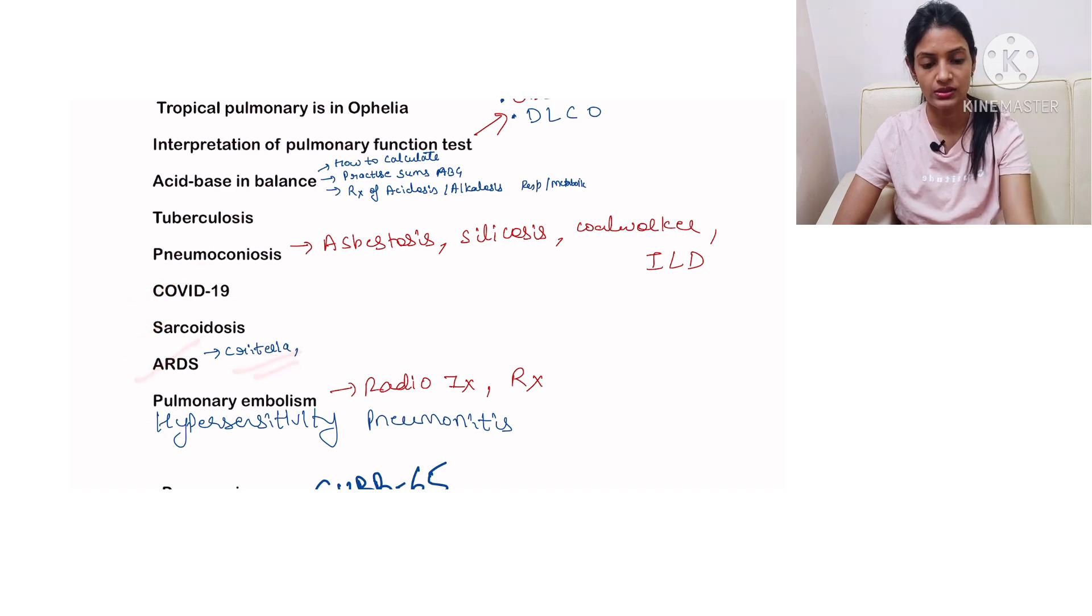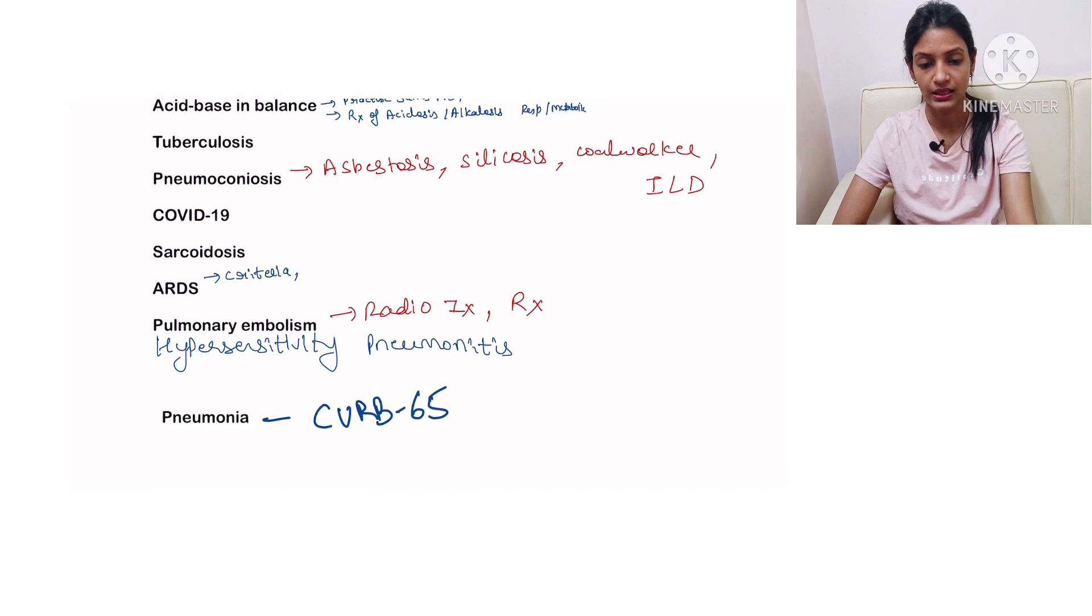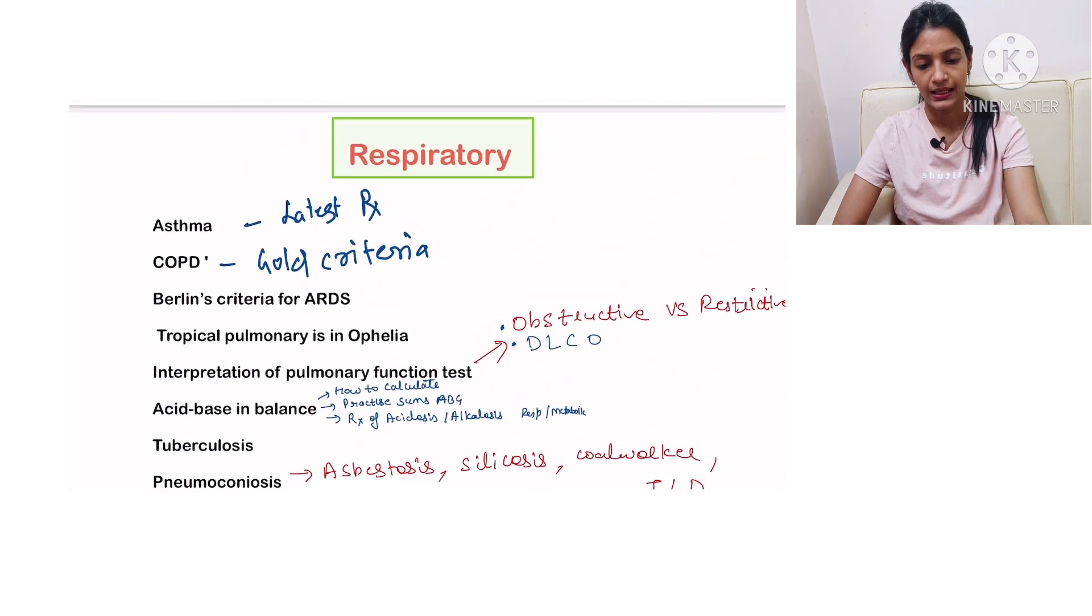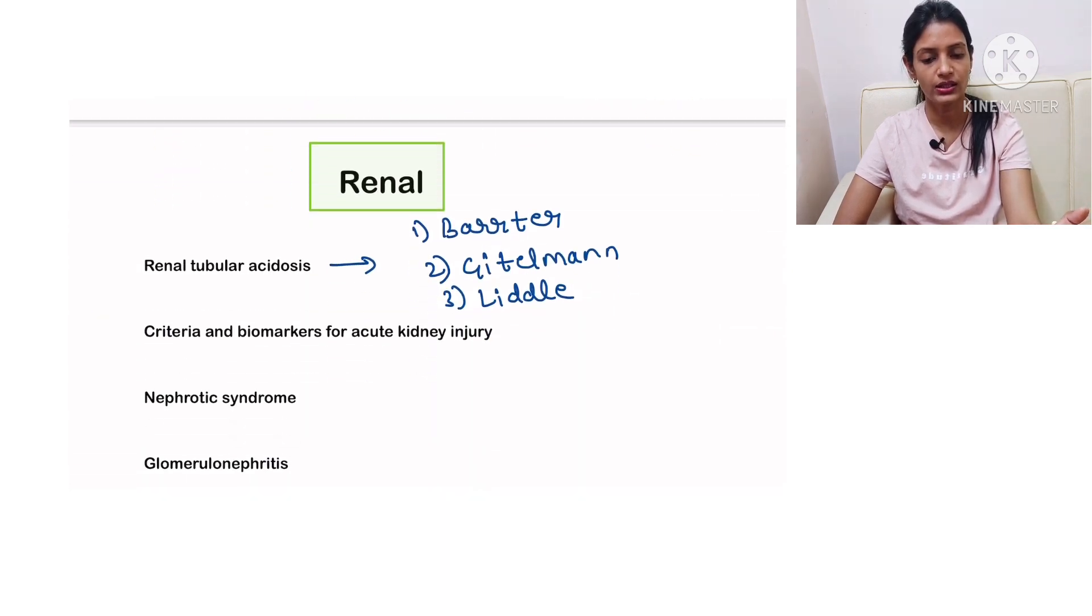In ARDS you must be knowing the criteria, then pulmonary embolism, radiological investigations, treatment and hypersensitivity pneumonitis, and the last in the respiratory unit is pneumonia. You must be knowing CURB-65 score. So this was about respiratory. Next, switch on to the renal.